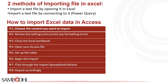A third reason is adding flexibility. Teams that use both programs for different projects and documents may learn how to import data for added agility when moving between the two. Another reason is combining two documents — if you want to merge data from two completed documents, you could choose to move the data from Excel to Access.